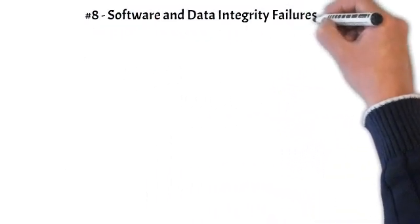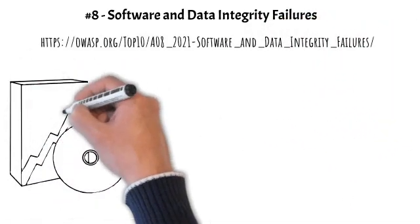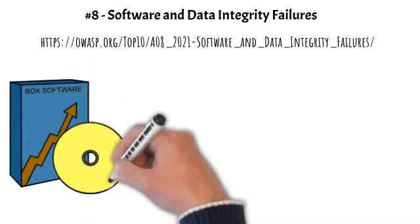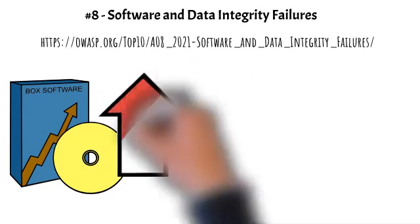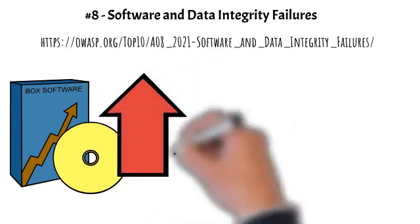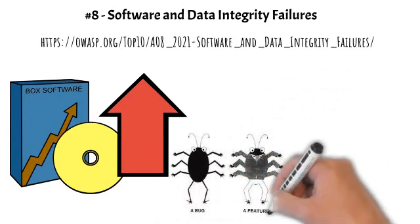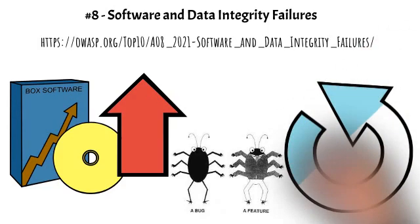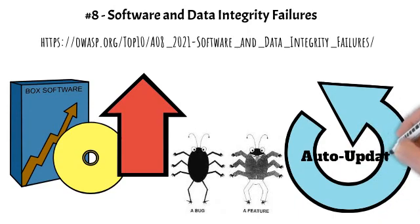Number 8: Software and Data Integrity Failures. A new category for 2021, focusing on making assumptions related to software updates, critical data, and CI/CD pipelines without verifying integrity. One of the highest-weighted impacts from CVE/CVSS data mapped to the 10 CWEs in this category. Insecure deserialization from 2017 is now part of this larger category.